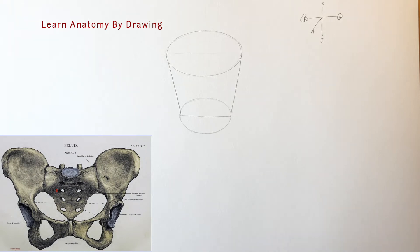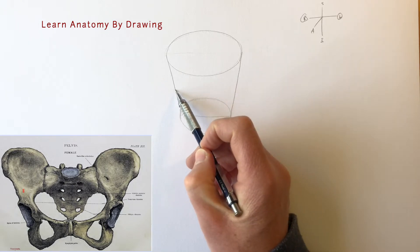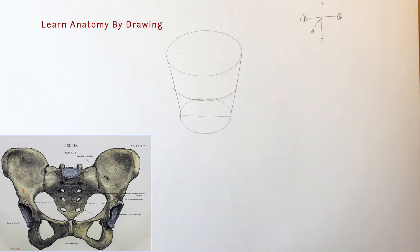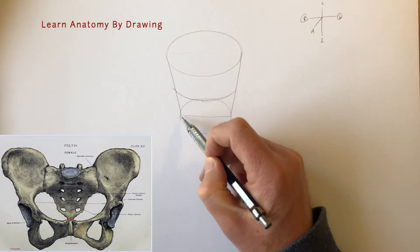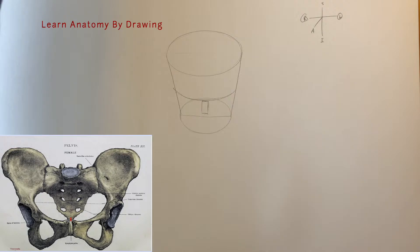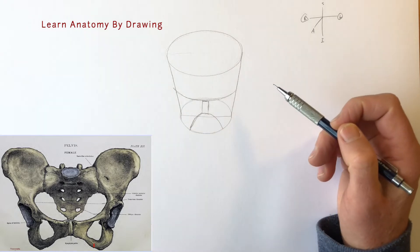Looking back at the reference, this part here drops down to this level, about halfway. I'm going to draw a bit of a smile there because it's wrapping around the front of our bucket. Then we'll draw the pubic symphysis, a rectangular structure in the middle, and from there it forms the pubic arch. Just drop a line down like that to give us our pubic arch.